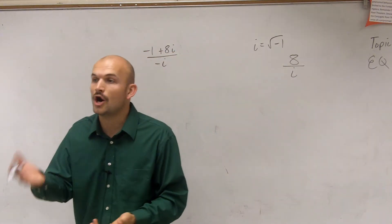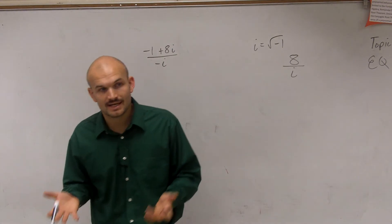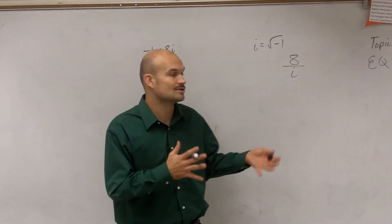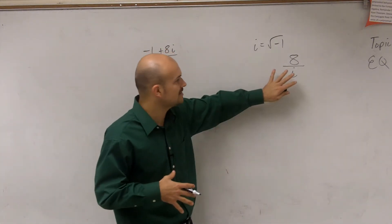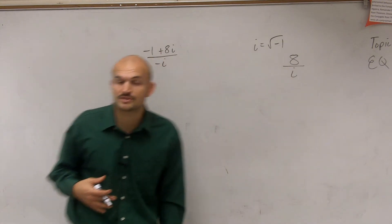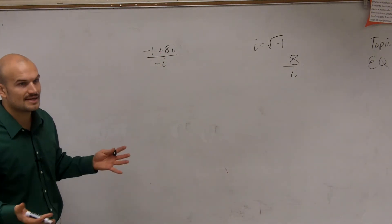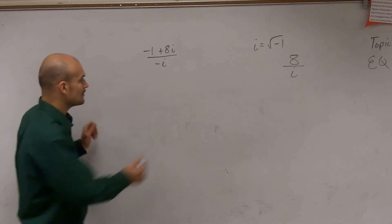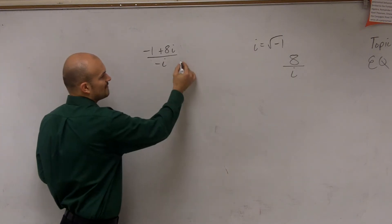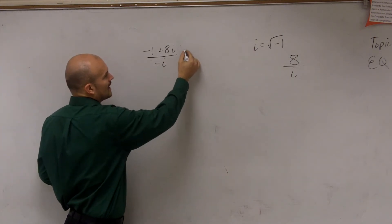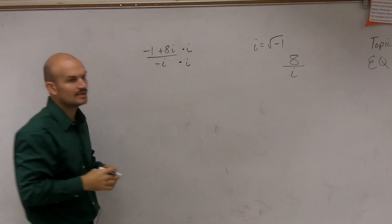So what we're going to do is we're going to get i off the denominator. So to get it off the denominator, that means we're going to have it not being divided. To get it off the denominator, what we're going to do is called rationalizing the denominator. To rationalize the denominator for imaginary numbers, if I multiply by i on the top and the bottom, let's see what happens.